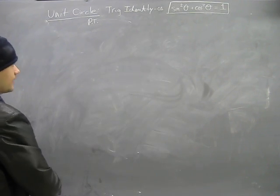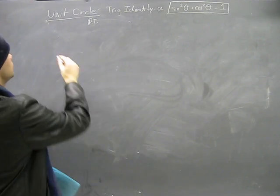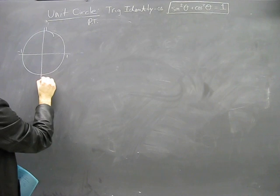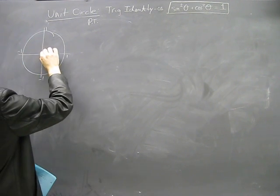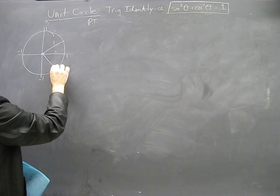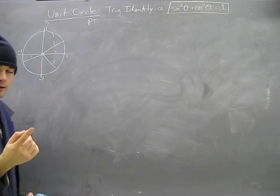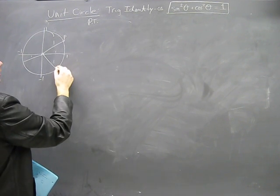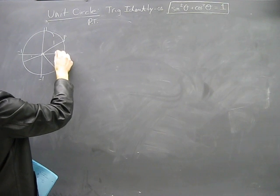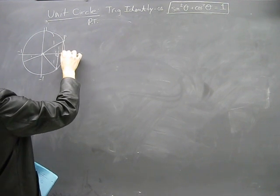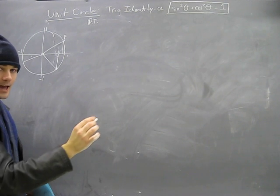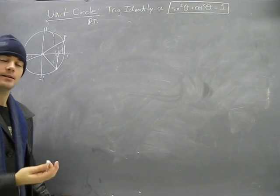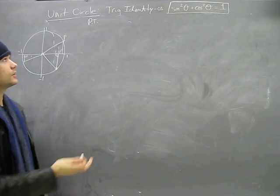In trig we're dealing with a unit circle. Our distances are one unit away from the center, and our radius is always one, no matter where it is. Anytime a point P touches the edge, it drops straight down to the x-axis and creates a ninety-degree angle.